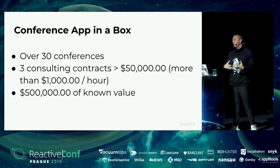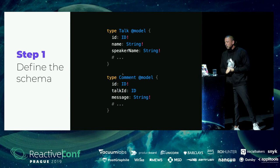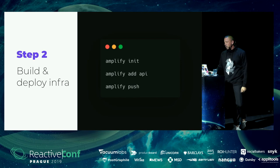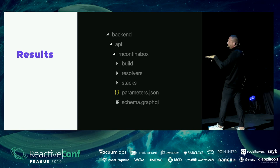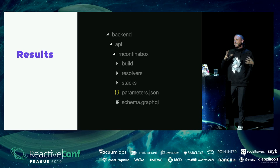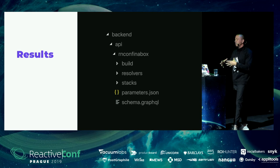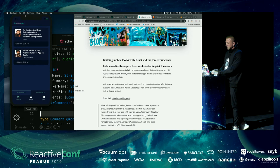Around half a million dollars of known value — and this isn't even something I've really tried to push. It's basically a conference app you can build, get running, and theme in just a couple of hours. The schema is the same Talk and Comment app we built earlier. You run 'amplify init', add the API, push to deploy the backend, and you're left with infrastructure as code in a backend folder you can share or redeploy.